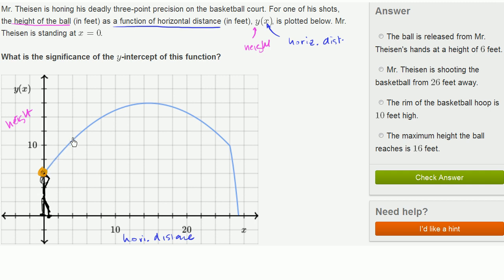And you see from the function right over here that where the graph intersects the y-axis, that tells us that's essentially the height of the ball when x equals 0, where Mr. Theosin is standing. And if we look at this, this looks like it's 2, 4, 6 feet high. So that's really the initial position of the ball when Mr. Theosin is about to let go of it. Then he lets go of it.